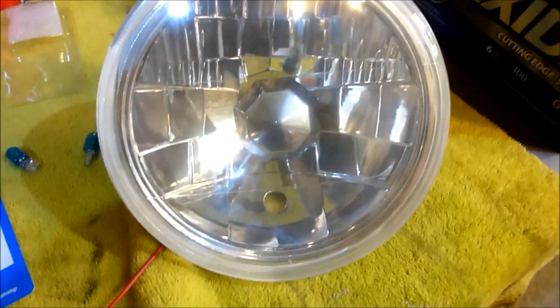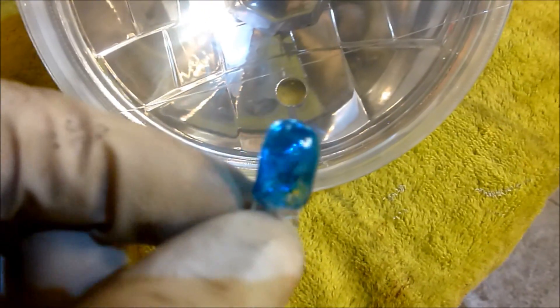replaceable H4 bulb and then a city light bulb. There's a little hole in there where a bulb goes through, and typically it's one of these little 194 or 912 spade terminal push-in base type bulbs.